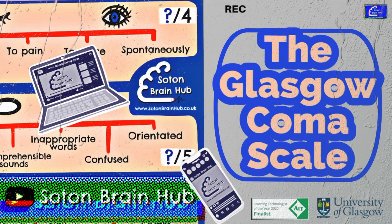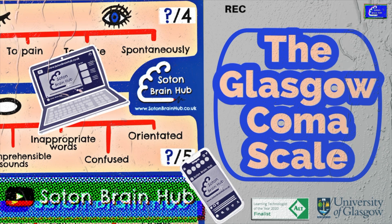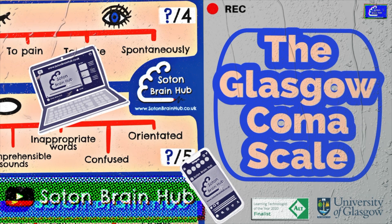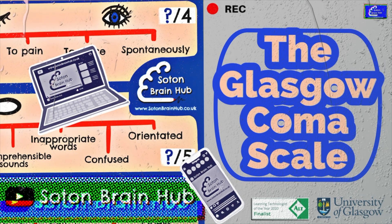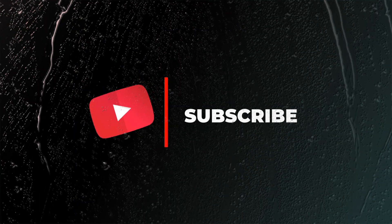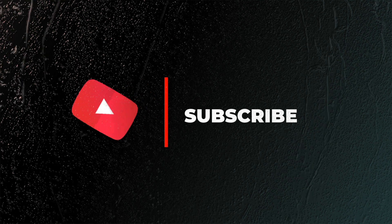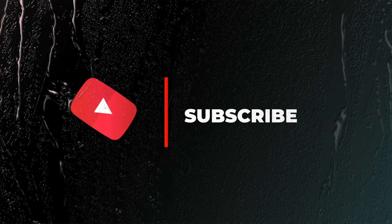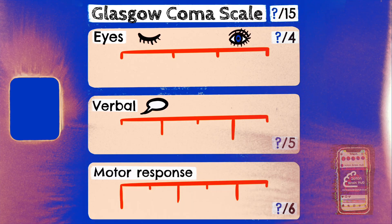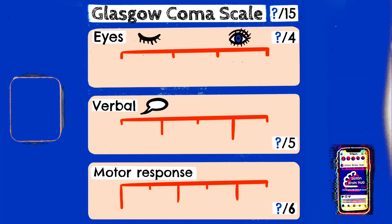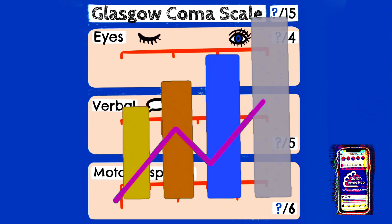Hi there and welcome to another Sotin Brain Hub video. My name is Emma and today we'll be talking about the Glasgow Coma Scale. The Glasgow Coma Scale is a clinical scale used to measure someone's level of consciousness after a brain injury. It is useful to track trends and changes in the patient to see whether their condition is improving or declining.